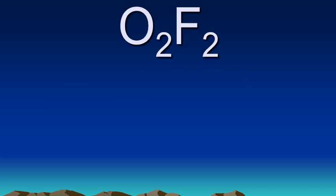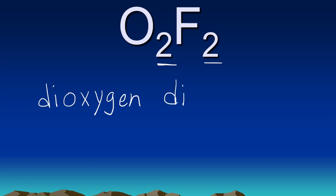Let's do one more. O2F2. We have two oxygens, so that becomes di. Is it dioxide? No, we only change the ending of the second or the last element to ide, so it's dioxygen. And then two F's would be difluoride. Dioxygen difluoride.